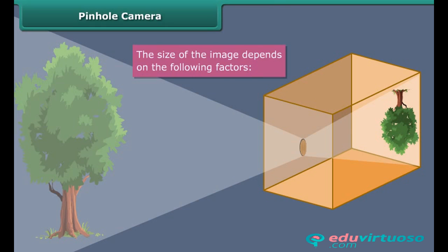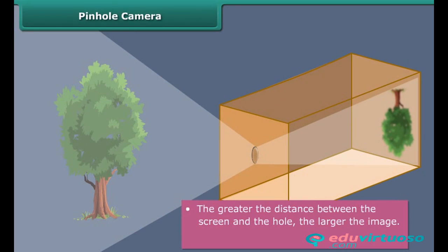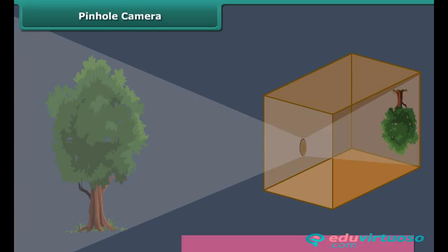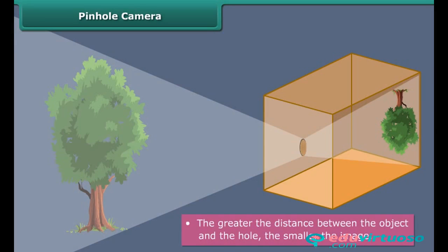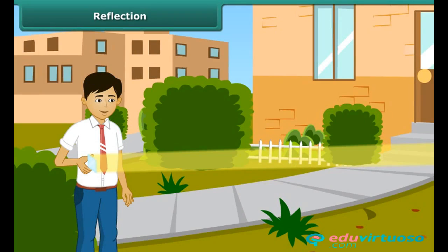The size of the image in a pinhole camera depends on the following factors: the greater the distance between the screen and the hole, the larger the image, but the larger the image the fainter it is; and the larger the distance between the object and the hole, the smaller the image.